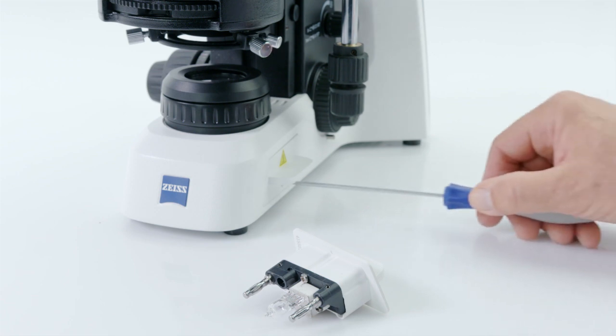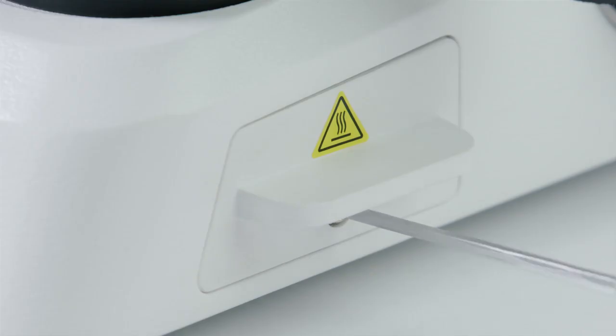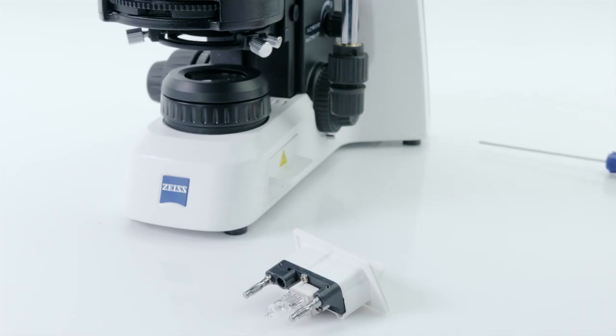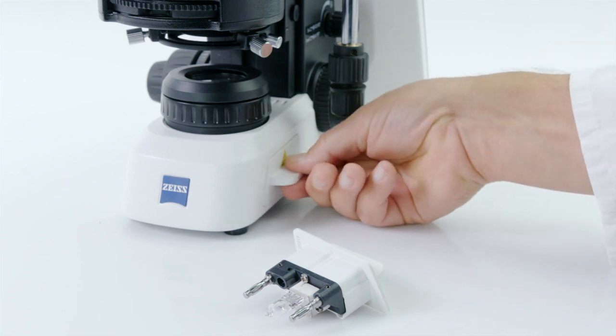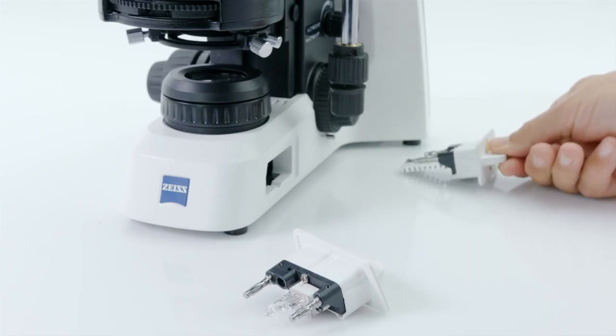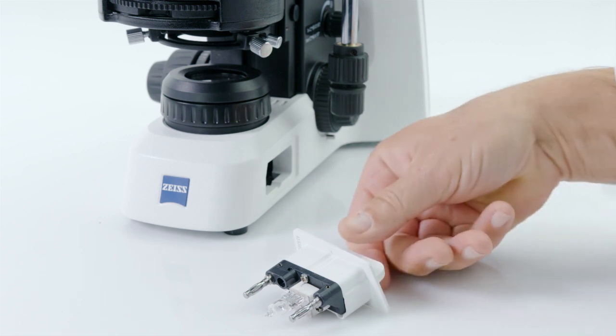All you need is an inbus key screwdriver, and even that comes in the PrimoStar 3 toolkit. Start by using that screwdriver tool to loosen the screw underneath the lamp housing until you can pull the insert out.